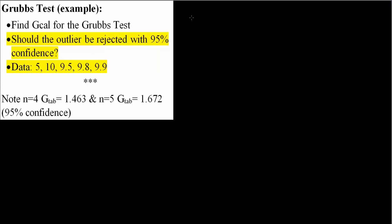The formula for Gcalc is the absolute value of the questionable value, the outlier, minus the average, divided by the standard deviation. Now we will first calculate our average, which is pretty simple.